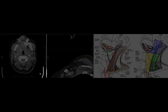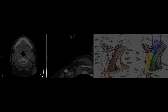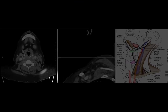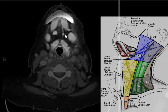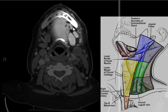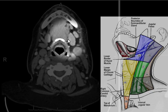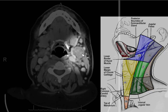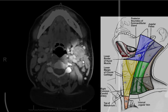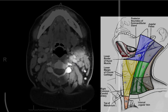Here we have a CT scan of somebody with a lot of cervical lymph nodes, and this is how we put that knowledge into practice. Anterior belly of the digastric — medial to them, we have two level 1a lymph nodes. We have level 1b lymph nodes lateral. Here's the submandibular gland. Posterior to that, we have a very large level 2a lymph node. Then we find the internal jugular vein. Posterior to that are level 2b lymph nodes. A lymph node that is not behind that line is considered 2a.